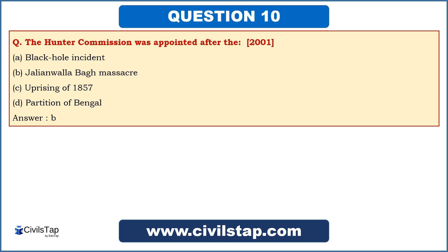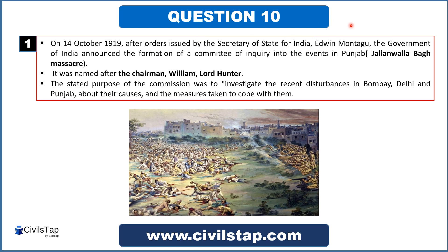Let's know more about the Hunter Commission. On 14th October 1919, Edwin Montague, who was Secretary of State, announced the formation of a committee to inquire into the events in Punjab — that is, the Jallianwala Bagh Massacre. Its chairman was William Hunter. This commission's purpose was to investigate the recent disturbances in Bombay, Delhi, and Punjab, examining the causes of those disturbances and what measures the British government took to cope with the conditions.